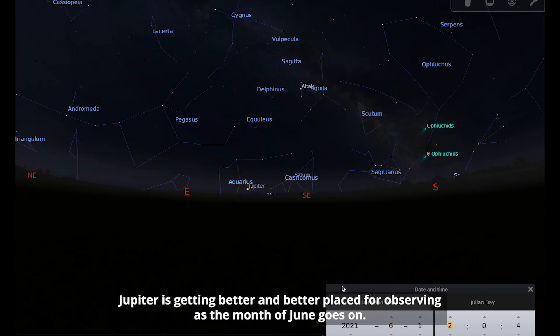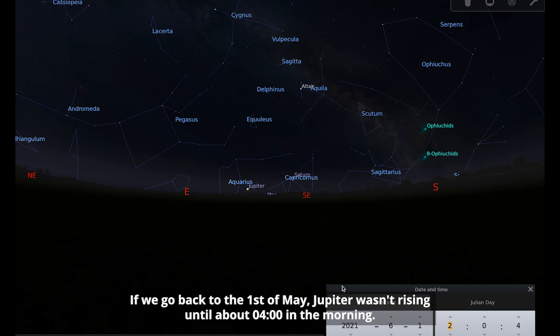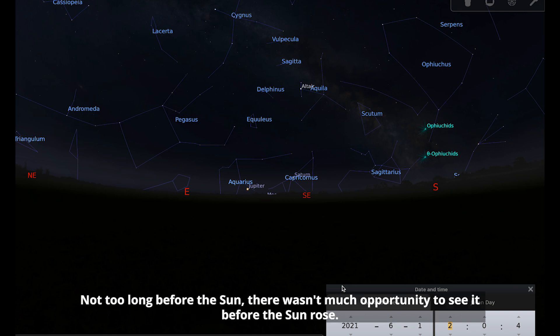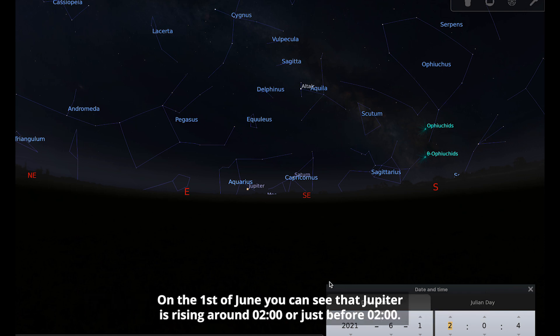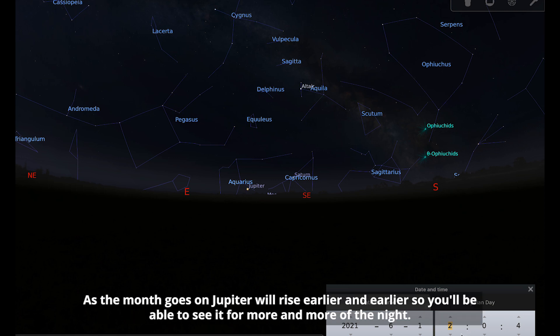Jupiter is getting better and better placed for observing as the month of June goes on. If we go back to the 1st of May, Jupiter wasn't rising until about 4 o'clock in the morning. On the 1st of June, Jupiter is rising around 2 o'clock or just before, and as the month goes on Jupiter will rise earlier and earlier, so you'll be able to see it for more and more of the night.